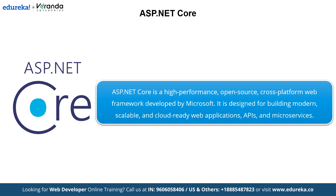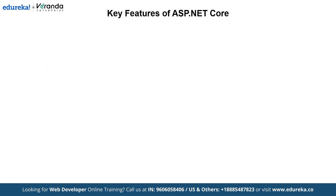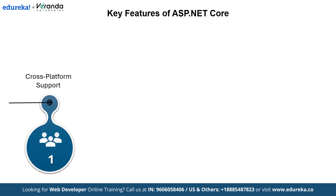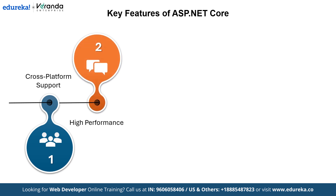Now that we know what ASP.NET Core is, let's explore its key features. First is cross-platform support — you can build and run ASP.NET Core applications on Windows, Linux and macOS, making it versatile and accessible. Developers can work on different operating systems without any compatibility issues. Next is high performance — it is optimized for speed, ensuring your web applications run faster and use fewer resources, making it a great choice for applications that need to handle high loads efficiently.